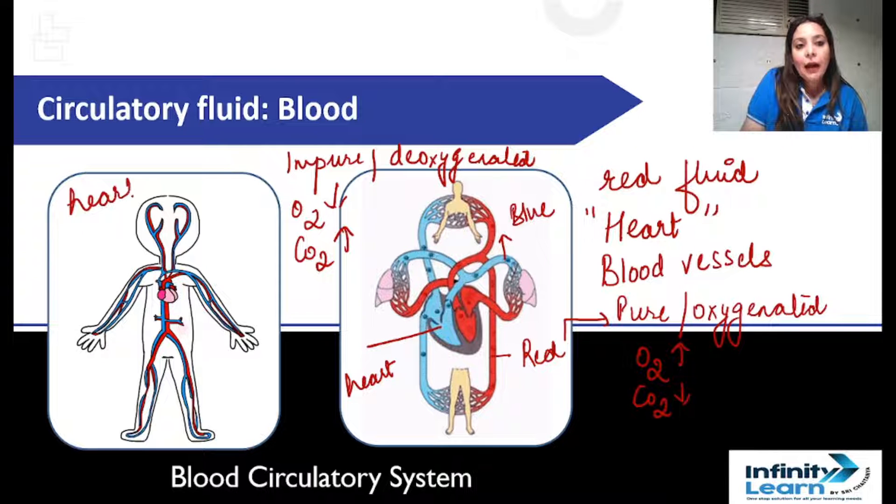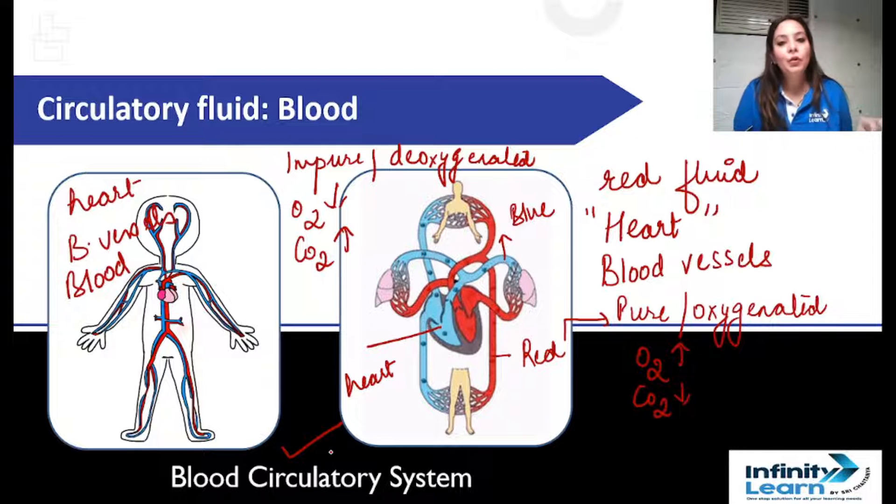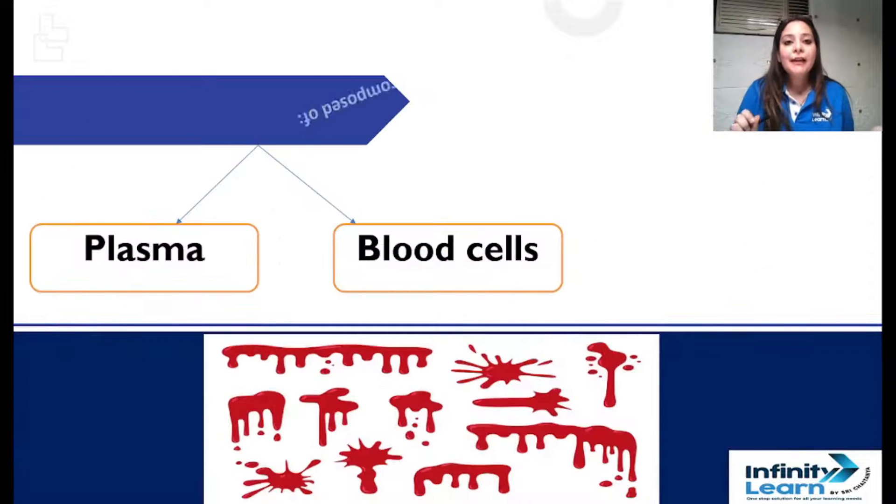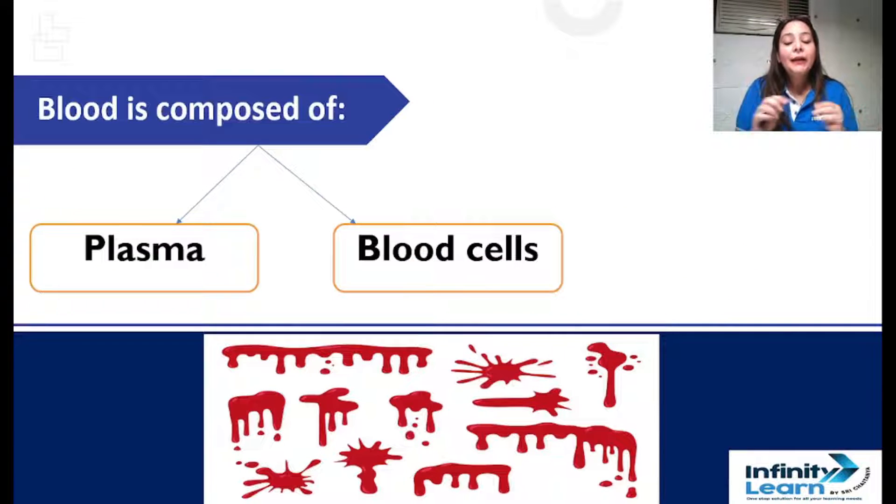So red fluid pumped by heart, blood vessels, circulating fluid blood, oxygenated, deoxygenated. Let me tell you, your heart, your blood vessels, and circulating fluid blood, these three are called blood circulatory system. So let's know what this blood is. When the red colored fluid oozes out, what does it actually have?